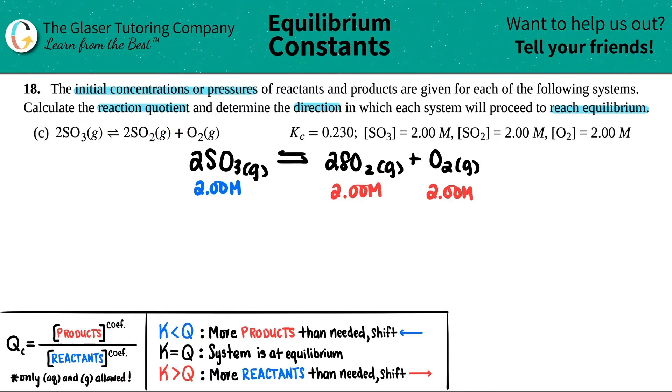Well, that all depends on the Q, the reaction quotient. We figured out how to make an expression like that. It's concentration of products divided by reactants, and then we just always raise it by their coefficients.